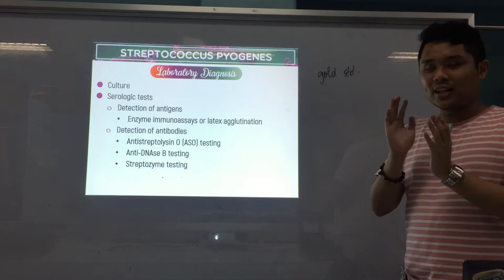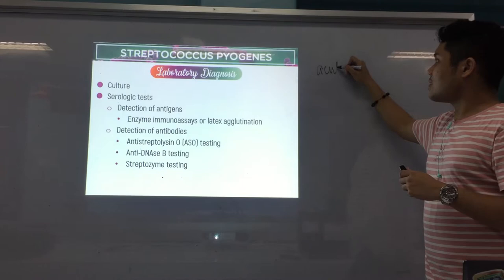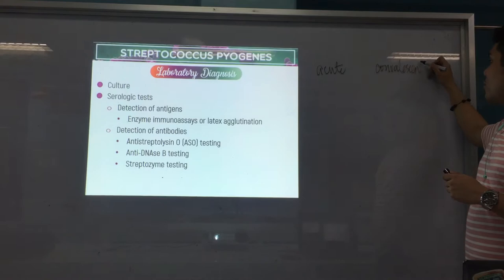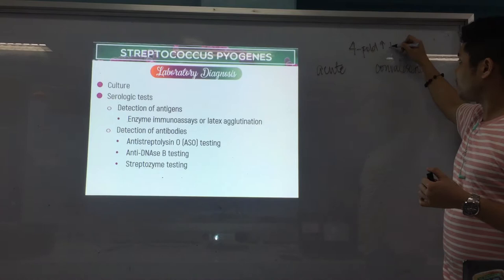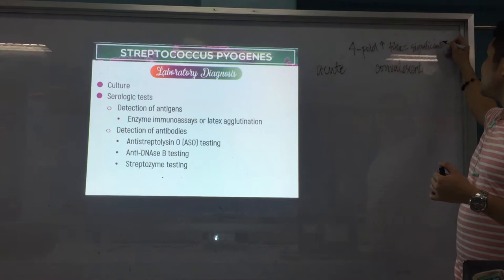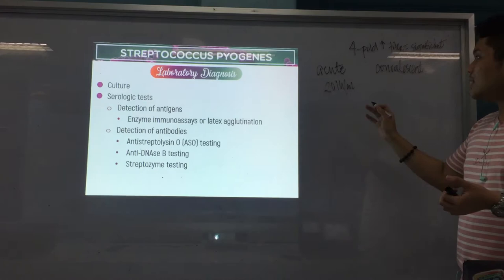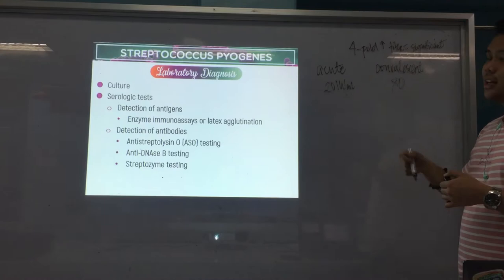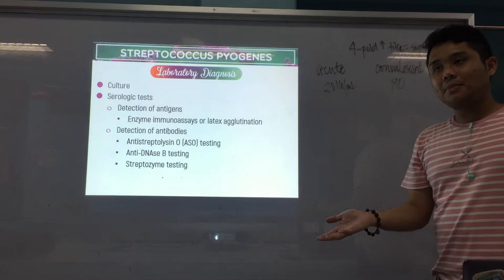If we test the serum of a patient — an acute serum and a convalescent serum — and there is a fourfold increase in the titer, that is significant. For example, if acute is 20 IU per ml and convalescent is 80, that's a fourfold increase. That means the glomerulonephritis or sequelae can be caused by a past S. pyogenes infection.